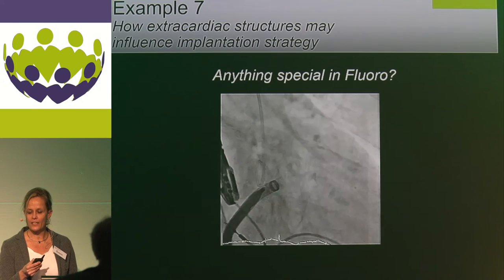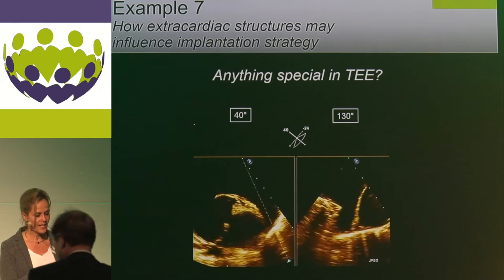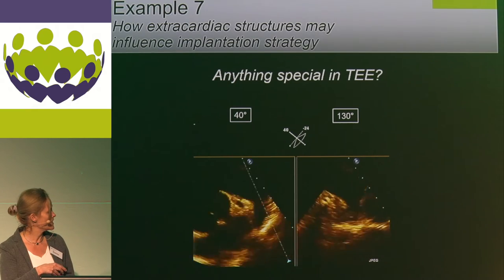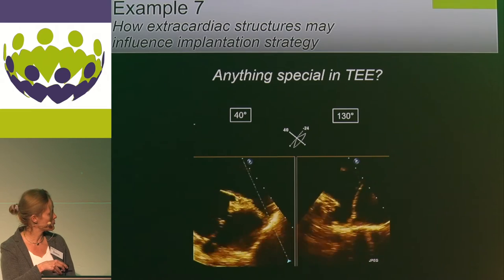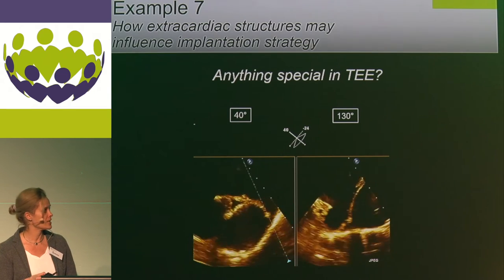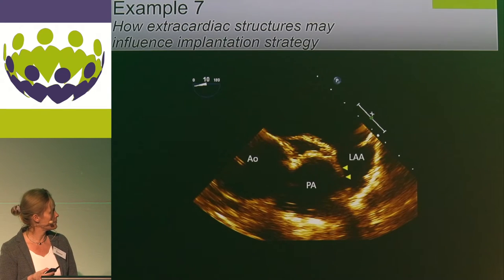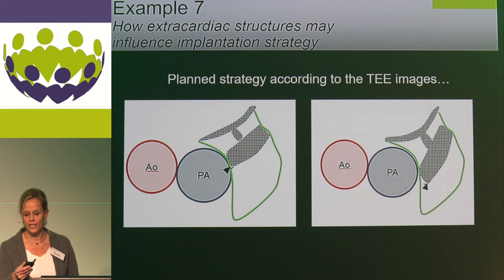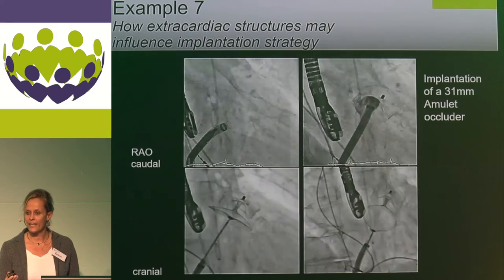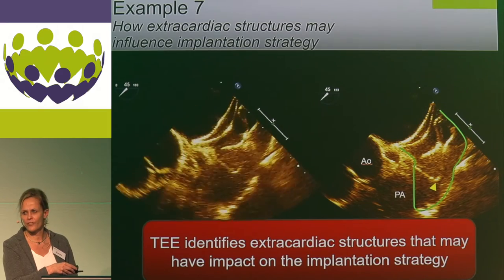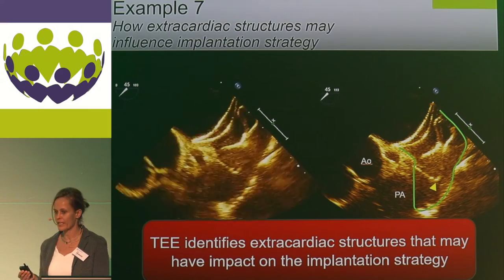In a final case of chicken wing morphology, when you see on TEE the left atrial appendage next to another structure — the aorta — and then realize the pulmonary artery is placed next to the left atrial appendage, it can be very dangerous if the hooks are pointing directly towards the pulmonary artery. In such a case, a different device positioning is preferred, and this was done here, ensuring in the final result that the hooks are not directly pointing towards the pulmonary artery.